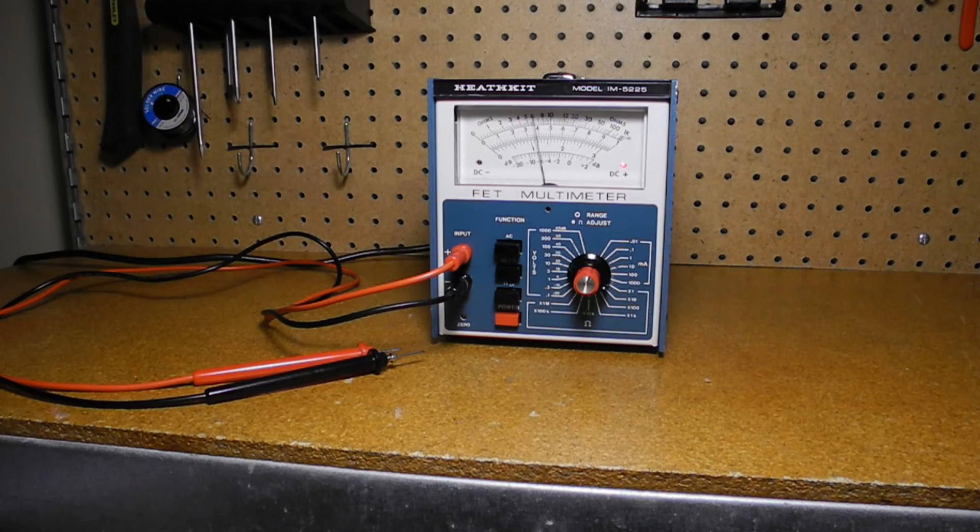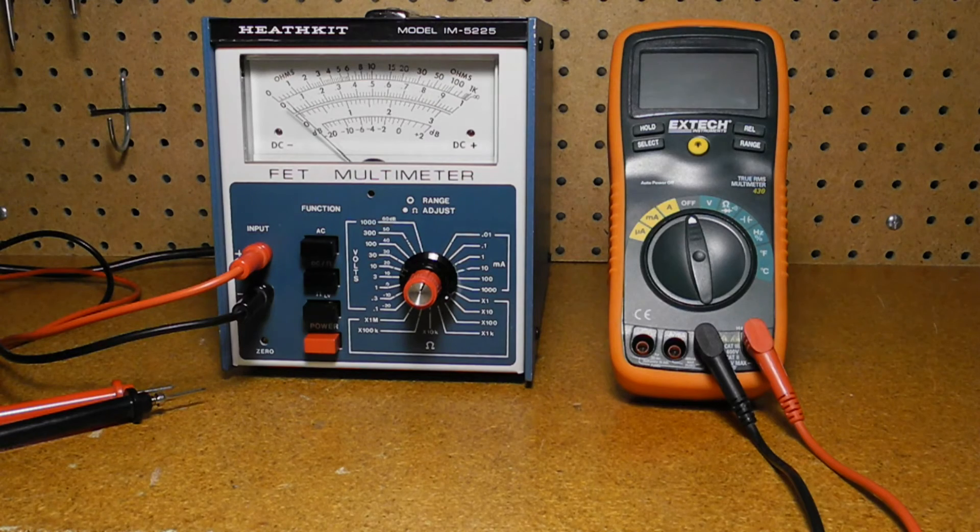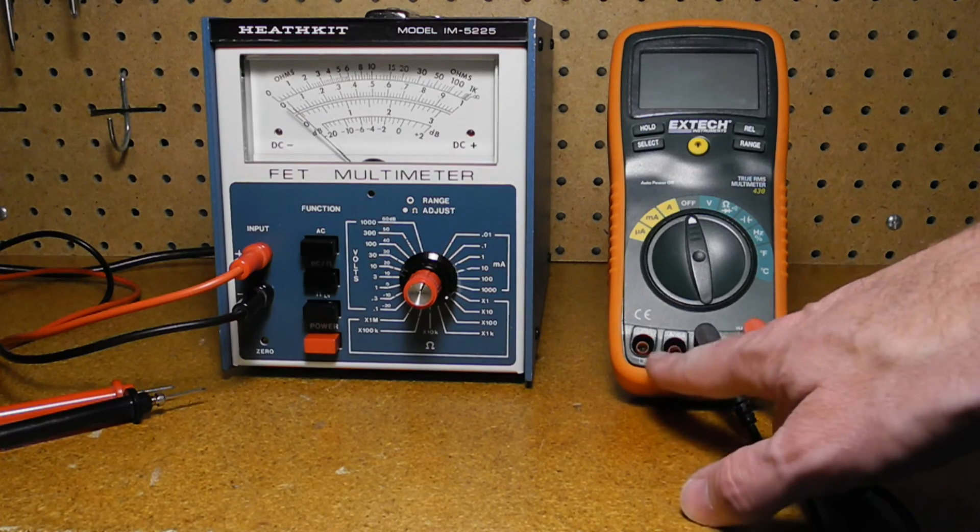The meter's input leads are floating and not referenced with respect to the AC power line case or chassis ground. This is a nice feature and it's not the case for some AC powered meters like Heathkit VTVMs and almost never true for oscilloscopes. Note the use of the same input jacks for current and voltage is somewhat dangerous. Inadvertently switching to current while measuring voltage will short the input. Most modern VOMs and DMMs use separate jacks to reduce the likelihood of doing this.